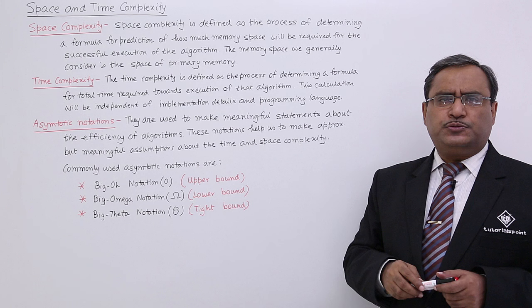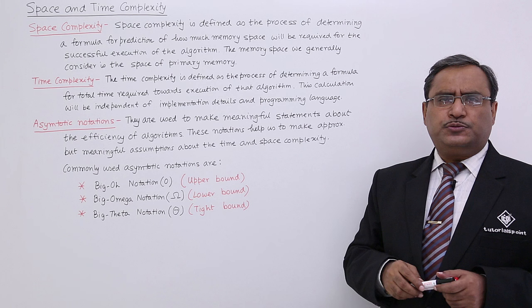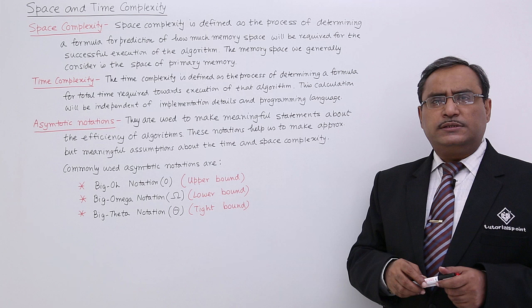In case of space complexity, the number of instructions getting executed — the number of instructions residing in the algorithm — that will decide the space complexity.